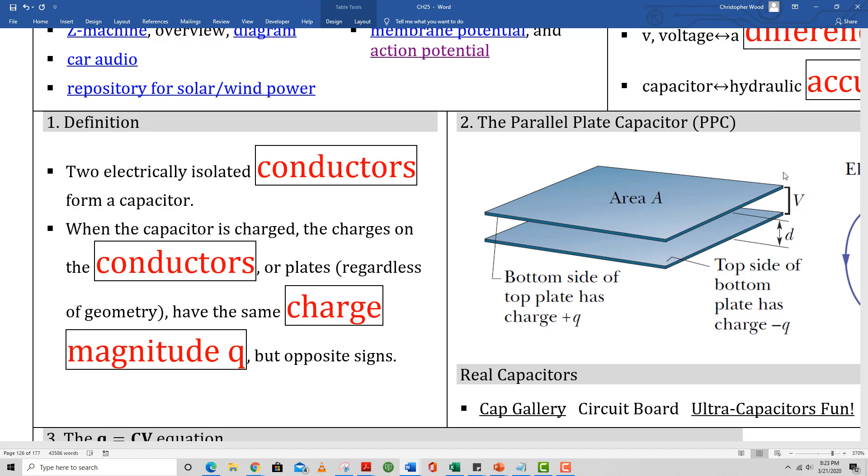Something does the work to deposit charges on a capacitor. So for example, the top plate might accumulate a charge of plus 6 coulombs, which means the bottom plate has to have a charge of negative 6 coulombs. In this case, we would say the capacitor has a charge of 6 coulombs, not 12, not 0, but 6.